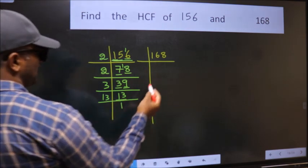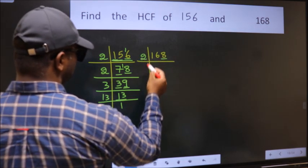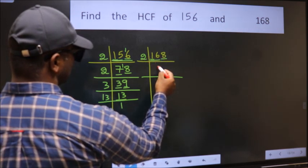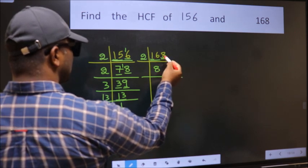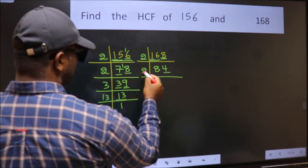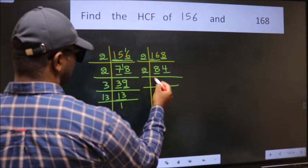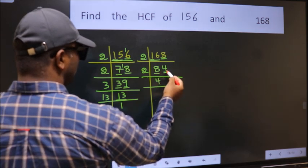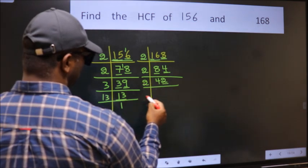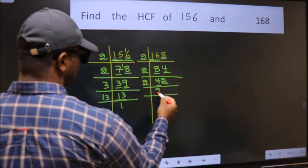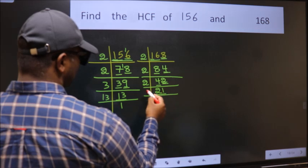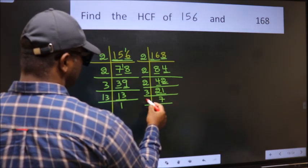For 168, the last digit is 8, which is even, so take 2. 168 ÷ 2 = 84. 84 is even, take 2: 84 ÷ 2 = 42. 42 is even, take 2: 42 ÷ 2 = 21. Last digit 2 is even, take 2: 21... Now 21 = 3 × 7, and 7 is a prime number. So 168 = 2 × 2 × 2 × 3 × 7.